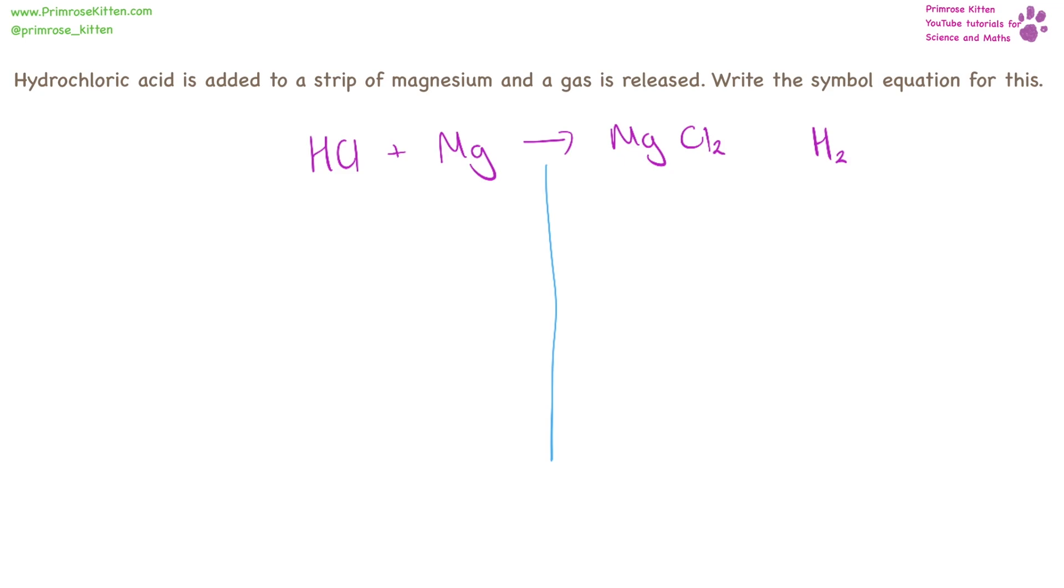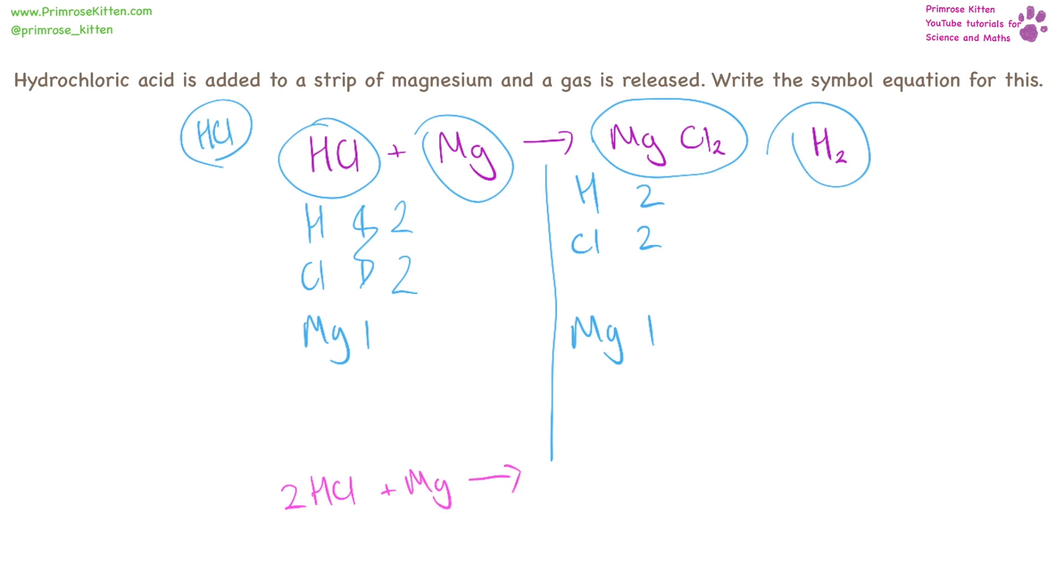So to balance our equation we draw a line down the middle. List what we have: Hydrogen, Chlorine, Magnesium. Circle the compounds that we have. List the numbers of things. So we have one Hydrogen, one Chlorine, one Magnesium. Two Hydrogens, two Chlorines, one Magnesium. So you can see straight away we need some more Hydrogens and some more Chlorines. The easiest way for us to do that is to add another HCl on there. Then we have two Hydrogens and two Chlorines. So that is balanced. Writing it out neatly for the examiners, because just leaving it like this won't get you the marks. We have two molecules of Hydrochloric Acid plus Magnesium turns into Magnesium Chloride plus Hydrogen.